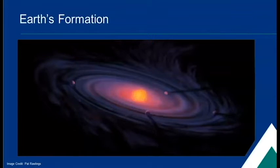On the slide, you can see a picture of the protoplanetary disk. You can see the sun in the middle, and you can see a bunch of dust and gas surrounding it.